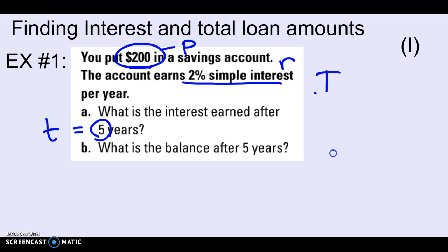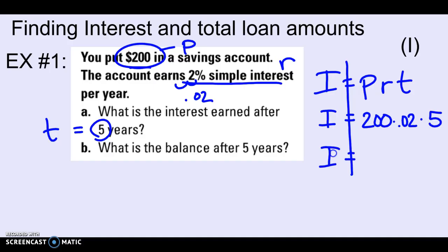So if I write down my formula, I equals PRT, I can plug in what I know, where it goes. I'm looking for the interest. The principal is $200. The rate as a decimal is 0.02. And the time is five years. So I can type that into my calculator and figure out the interest. So it looks like I get $20 for the amount of interest that my money would earn while it's sitting there. So that's the answer to A.